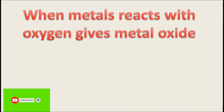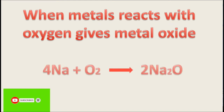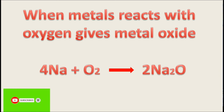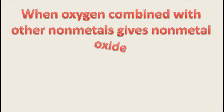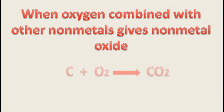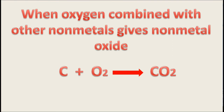When metals react with oxygen, they give metal oxides. For example, when sodium combines with oxygen, it gives sodium oxide. Similarly, other metals are oxidized into their oxides. When carbon burns in oxygen, it gives carbon dioxide. Sulfur combined with oxygen gives sulfur dioxide — these are non-metallic oxides produced by reaction with oxygen.